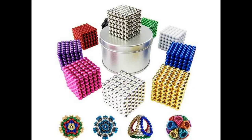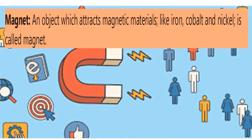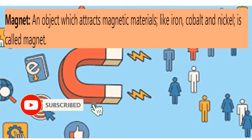So, what is a magnet? A magnet is an object which attracts magnetic material like iron and cobalt, and it is called a magnet.